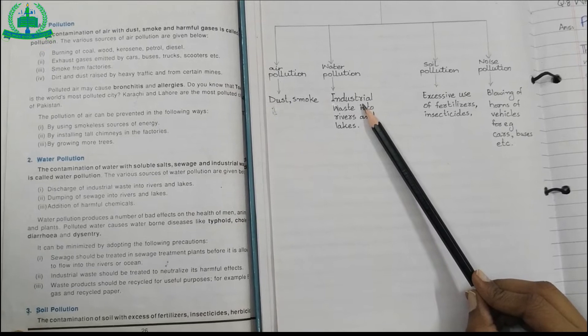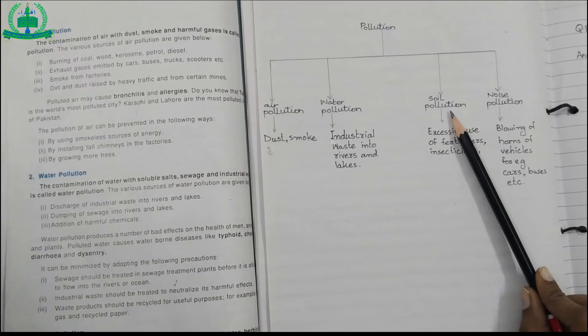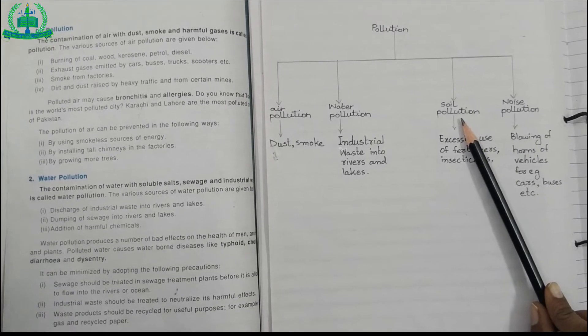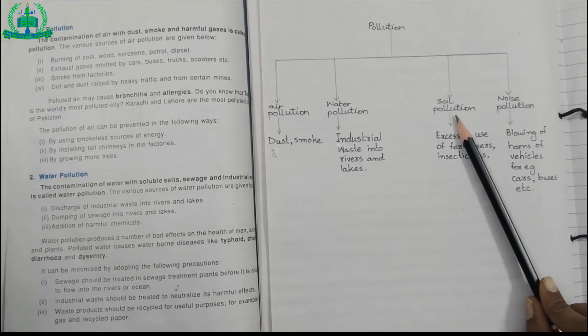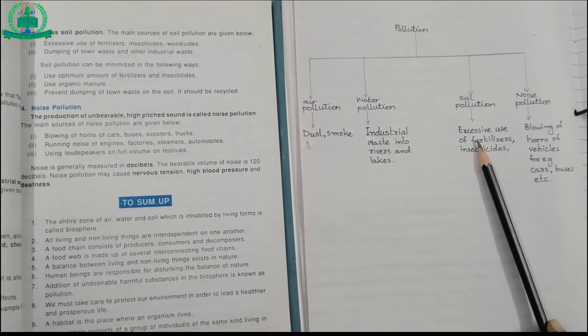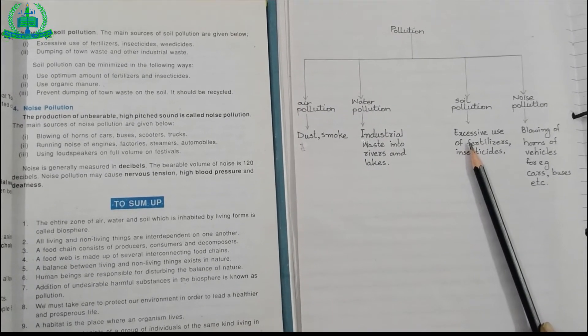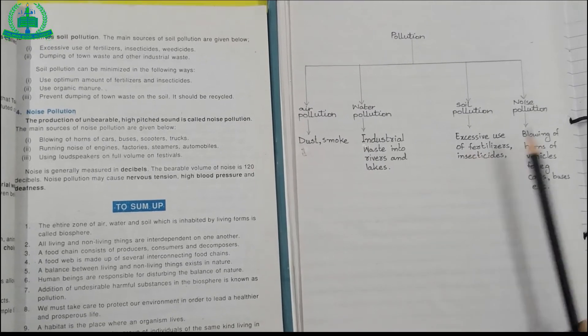Soil pollution is the contamination of soil with excess of fertilizers, insecticides, and herbicides. For example, excessive use of fertilizers, insecticides, dumping of town waste and other industrial waste.